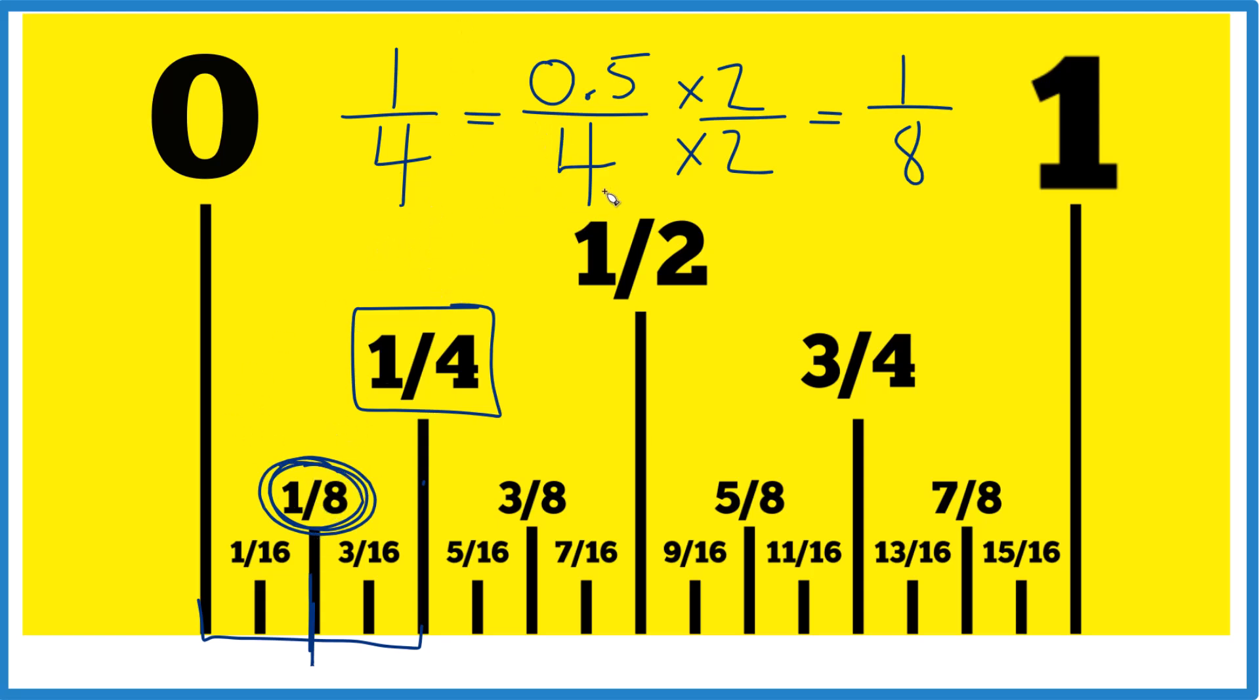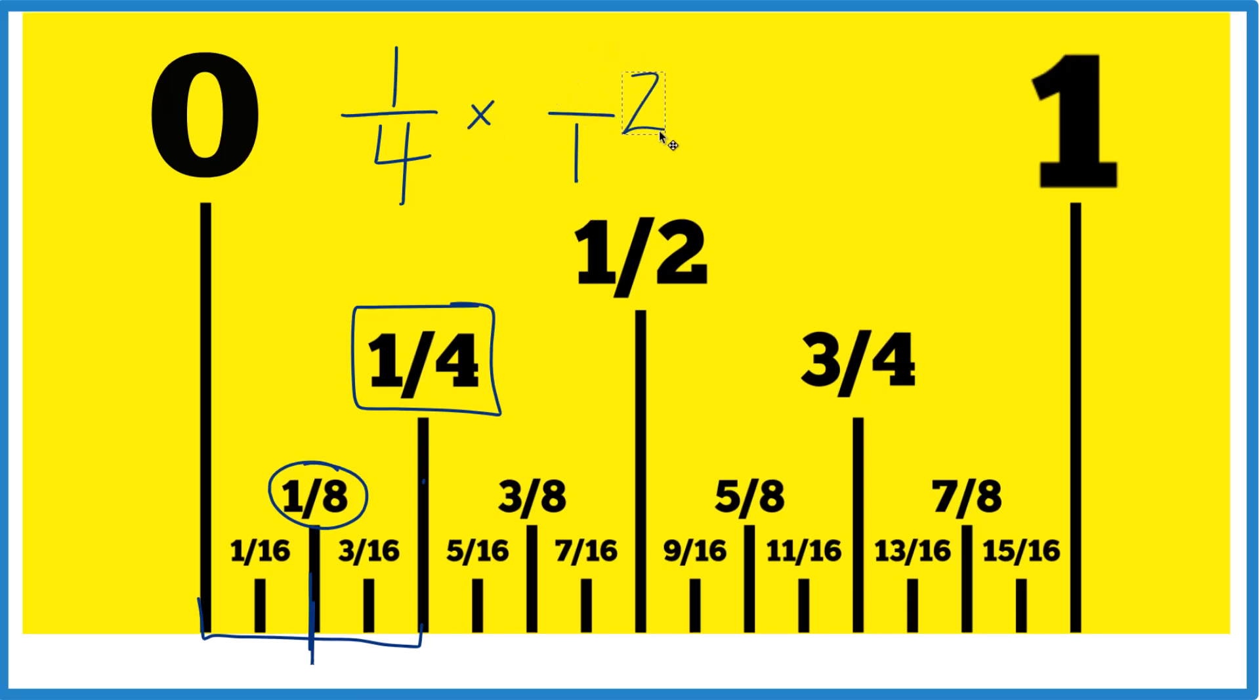One last way you can do this, more of the math way to do it. So we're dividing by two. So half of one fourth is one fourth divided by two. But let's call it two over one. It's still two, we're just dividing by one. And instead of division, we're going to multiply by the reciprocal. That means we move the two to the bottom and the one to the top.